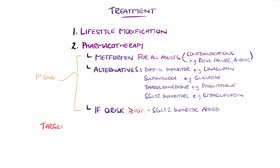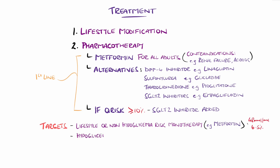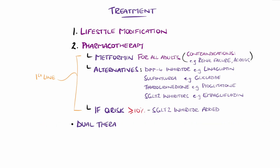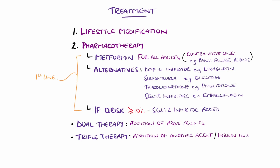For most adults with type 2 diabetes, the target for HbA1c is 48 millimoles per mole, or 6.5%. This is the case when managed with lifestyle alone or with drugs not causing hypoglycemia. If instead it is treated with drugs that do carry a hypoglycemic risk, such as sulfonylureas, or they are using two or more anti-diabetic medications, the target is 53 millimoles per mole, or 7%. If this target is not met, an additional agent can be added to form dual therapy. If dual therapy fails, then a third medication can be added to make triple therapy, or insulin can be initiated. Beyond this, GLP-1 receptor agonists like tirzepatide are considered if triple therapy fails, especially in patients with a BMI above 35.